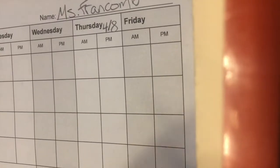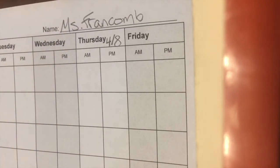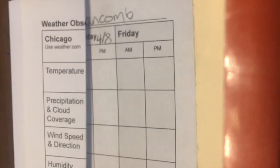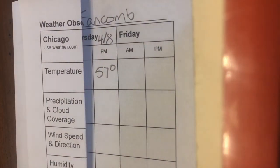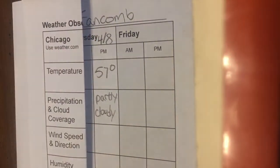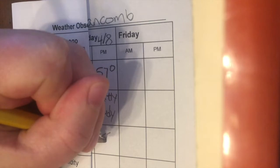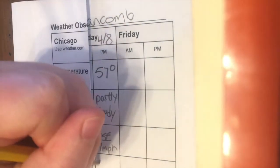The day that I am doing this is Thursday, April 8th, and I have my name at the top of my paper. I'm just going to fold this quickly so you can see a little bit better what I am doing. So it's the afternoon: the temperature is 57 degrees, it is partly cloudy, the wind is moving east-southeast at seven miles per hour, and the humidity is 68 percent.